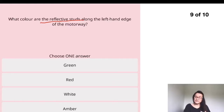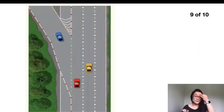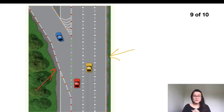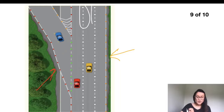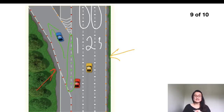Question nine: what color are the reflective studs along the left-hand edge of the motorway? The color is red. You need to know them all: red studs are on the left-hand edge of the road; amber studs divide the road from the central island; white studs divide the lanes; and green studs are between the road and the slip road — seen before exits or entrances when joining the motorway.